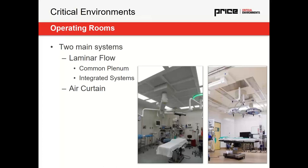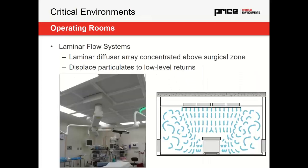There are two main design styles used in this type of space. The first is a full laminar flow array system, which can be done with individual laminar flow diffusers, a common plenum system, or an integrated system. The other is an air curtain system. For a laminar flow system, we need to meet that 70% table coverage. If we have additional airflow to supply to meet our air change rate requirement, we add additional laminar flow diffusers until we have enough to supply the total required airflow. We have low-level returns in the space exhausting that airflow.